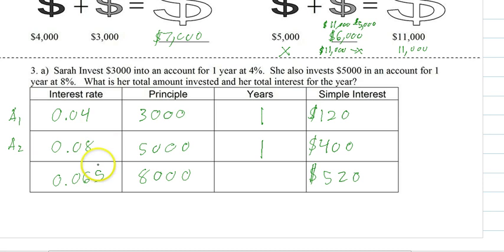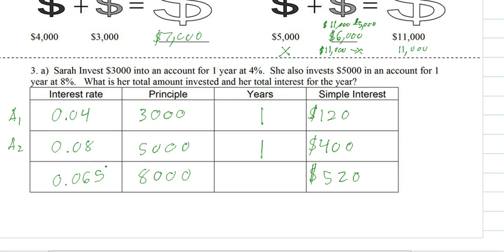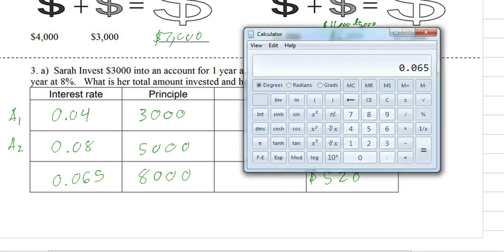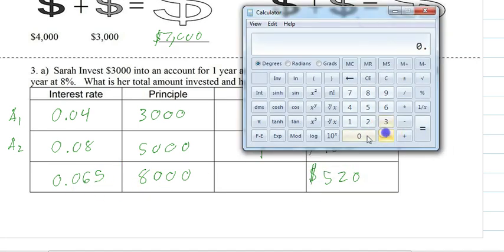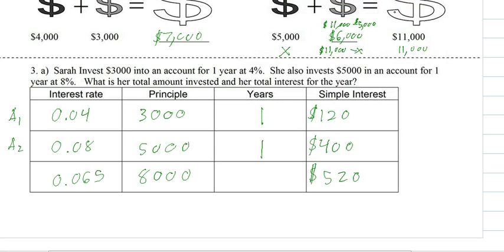These individual rates will never simply add up. The final combined interest rate will always be a blend of the two — it's an in-between value. You're getting a low of 4% and a high of 8%, so together you get 6.5%. These two interest amounts add up to the total interest, and these two principals add up to the total investment. That's simple interest with two different accounts.